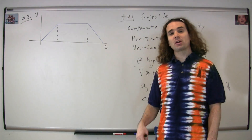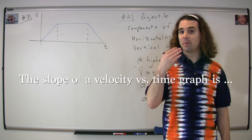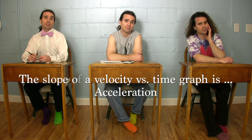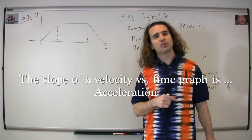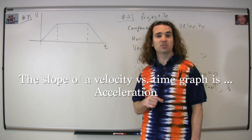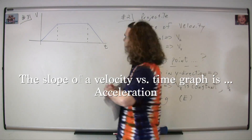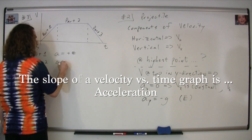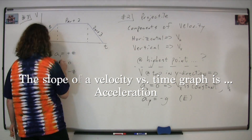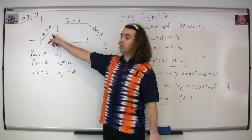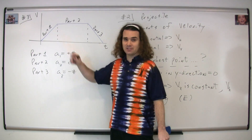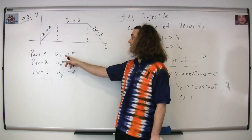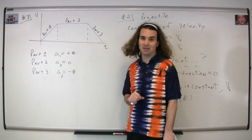Let's start out by recalling: what is the slope of a velocity versus time graph? Acceleration. We need to split this graph into three different parts. You can see that the slope for part one is constant and positive, therefore the acceleration for part one is a constant positive number.